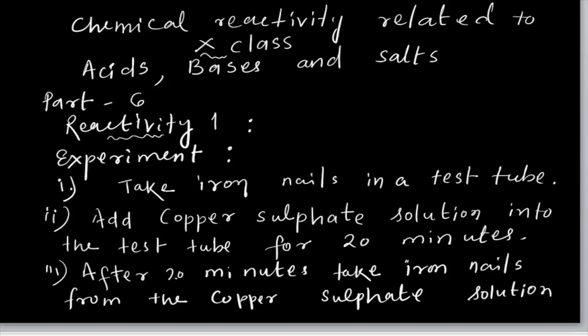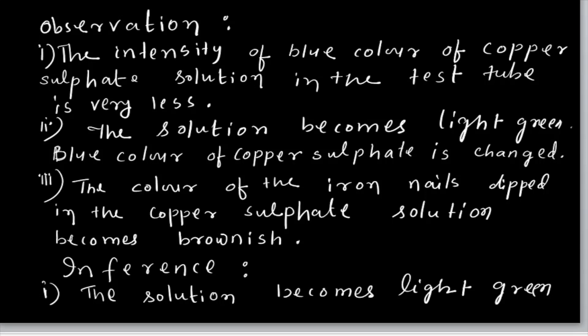The copper sulphate colour is blue and the iron nail colour is brown. The intensity of the blue colour of copper sulphate changes — it gradually decreases and the solution becomes light green. The solution becomes light green because ferrous sulphate is produced. Copper sulphate is blue and ferrous sulphate is light green colour, which is why the solution turns light green.